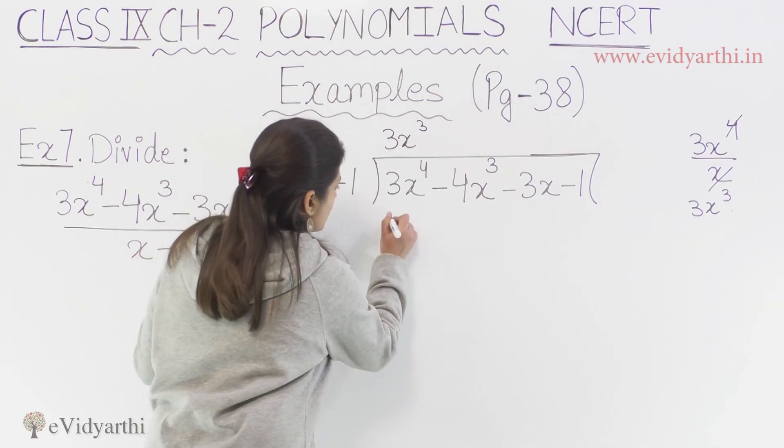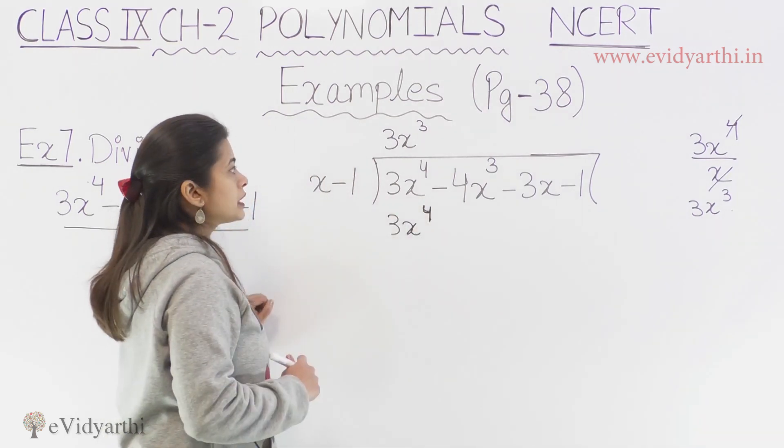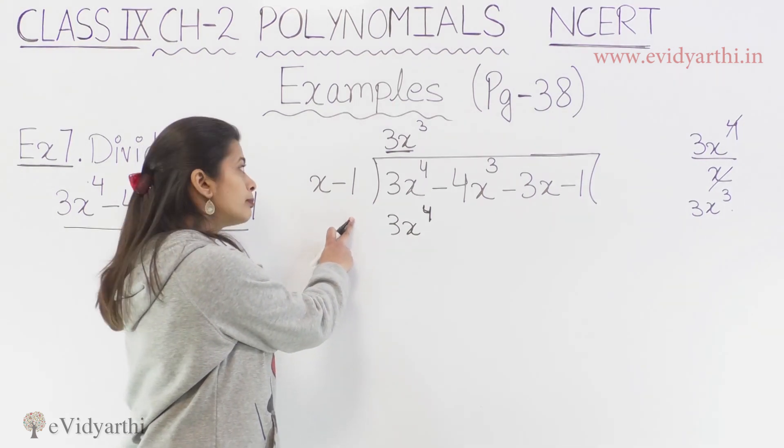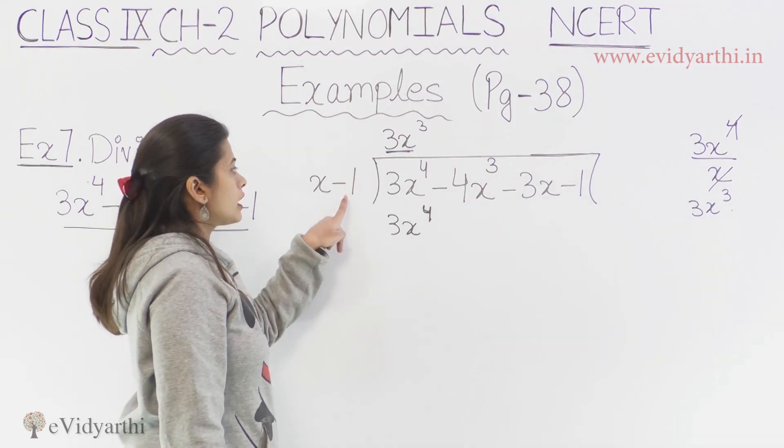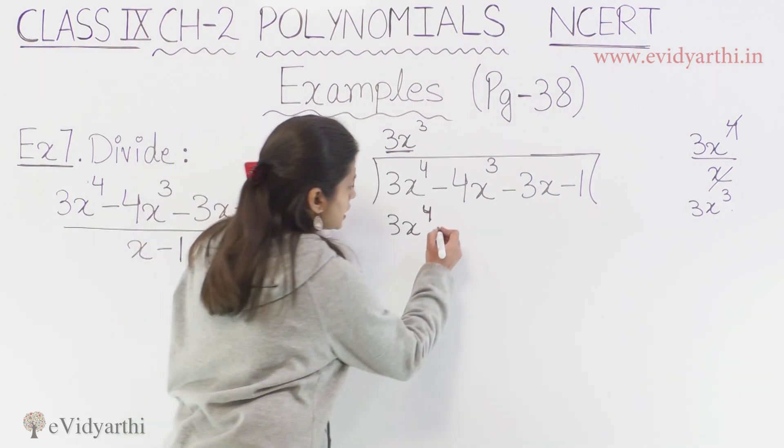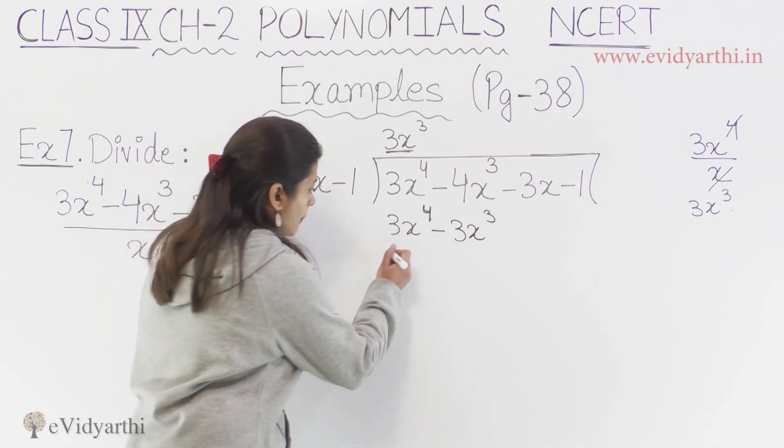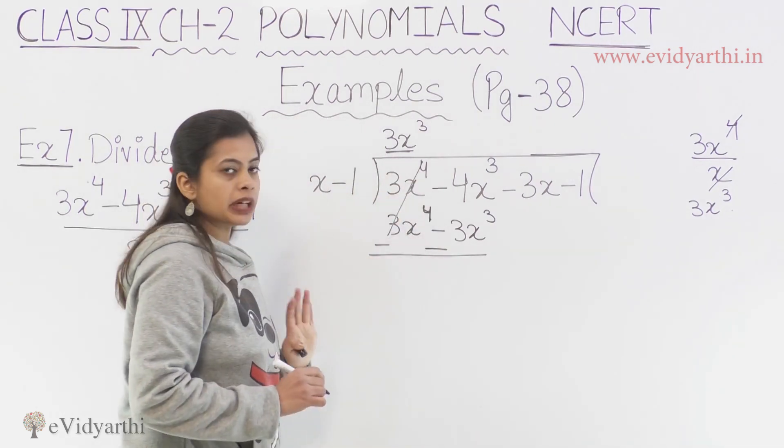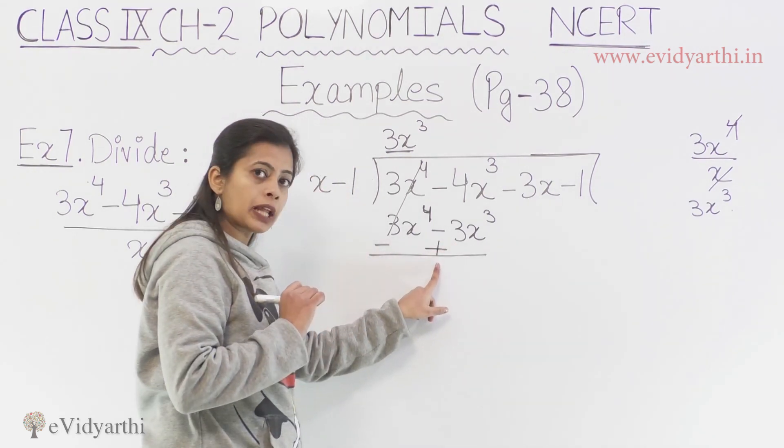So isi tariqe se, mere paas sab se pahle term 3x ki power 4 to aagya. But now the other challenge is that we will get this term from our divisor next term multiply. So we have minus 1 here. If we multiply 3x^3, we will get minus 3x^3. So minus 3x^3. Now what do we have to do? Subtract and change. So here we have to cancel out. Then we will have sign change. So this would be plus.